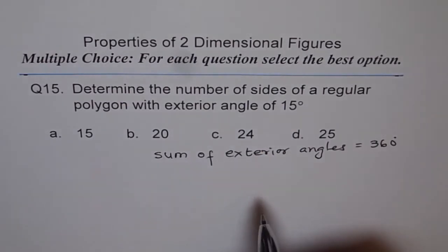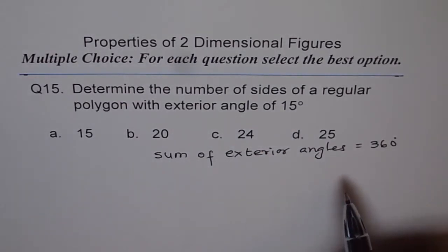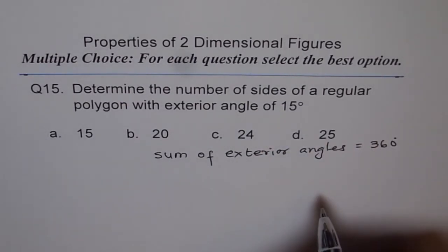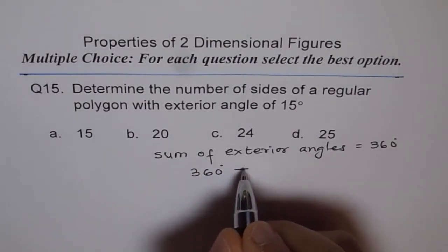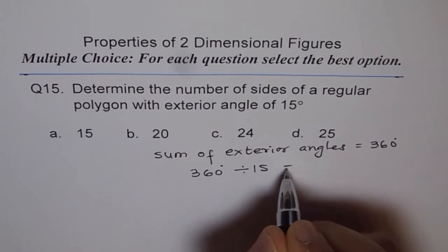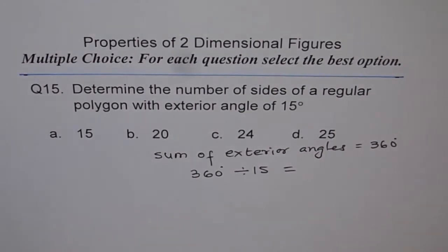Now, if one angle is 15, how many angles are there? That is the question. If one is 15, how many angles are there? What we need to do is, we need to divide 360 by 15 and get our answer. If we do that, we get 360 divided by 15 gives us 24.